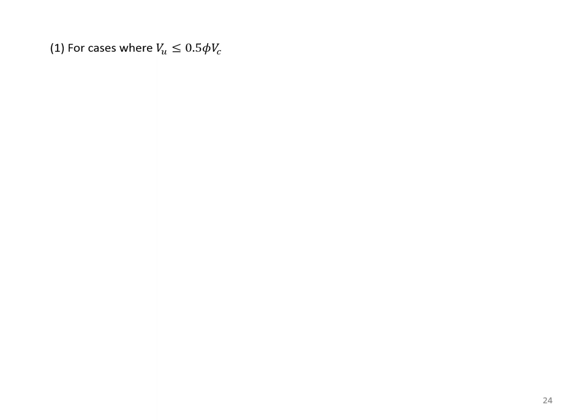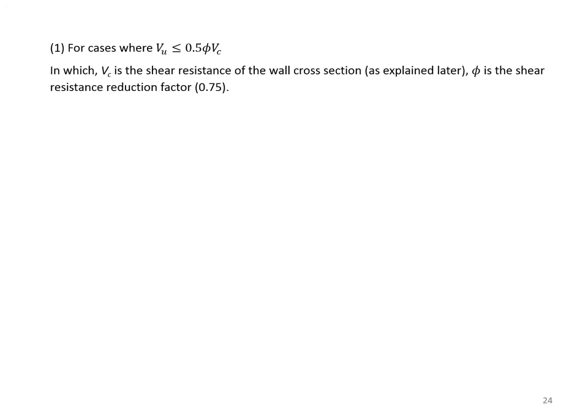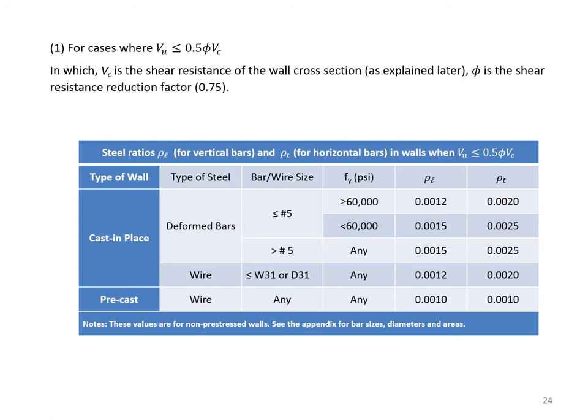For cases where VU < 0.5φVc, where Vc is the nominal shear resistance and φ = 0.75 for shear, this table provides the steel ratio ρL. For cast-in-place walls using #5 or smaller bars with Fy = 60,000 psi, ρL = 0.0012 and ρT = 0.002.